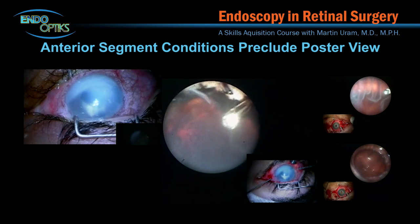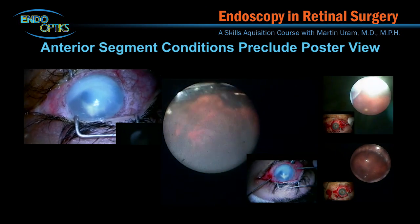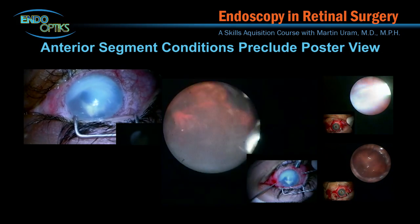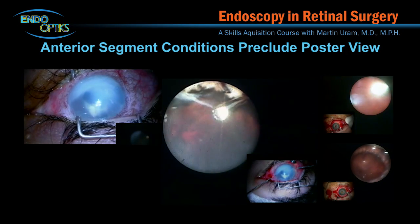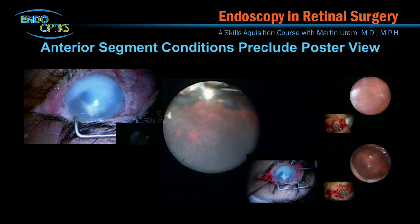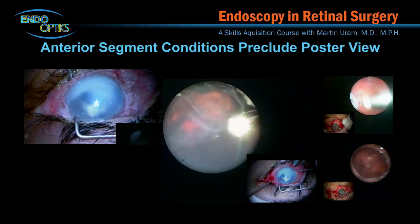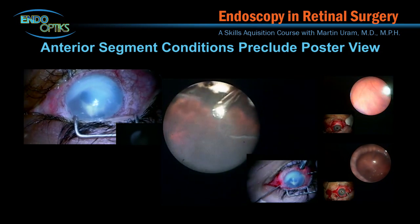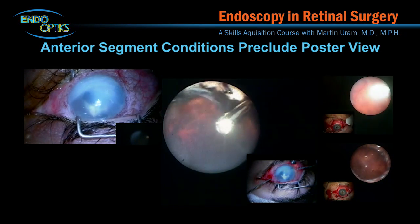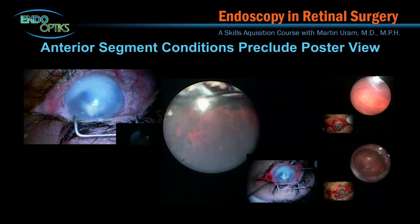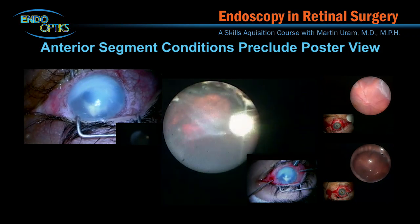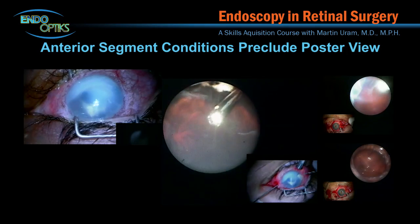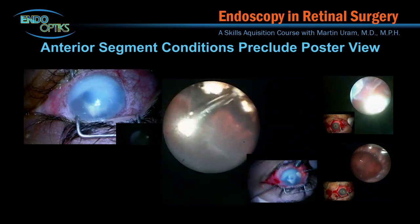It is a common experience to have a deteriorating intraocular view during vitrectomy. A cloudy cornea, miotic pupil, hyphema, cataract formation, condensation on the posterior capsule surface during air-fluid exchange, and others are frequent impediments to proceeding with a clear intraocular view, especially in more prolonged cases. When inserting the endoscope through the pars plana, these clinical situations become irrelevant because the view is derived from the tip of the endoscope, which is within the eye and posterior to the difficulties that are occurring.